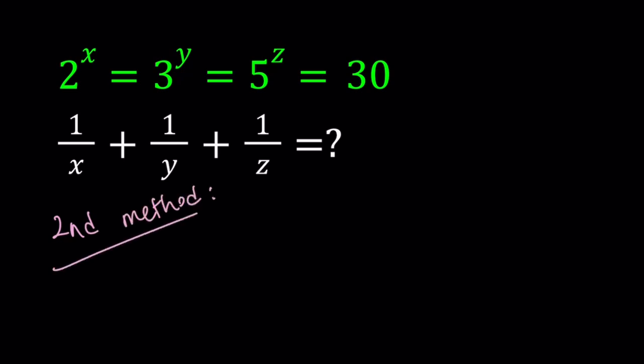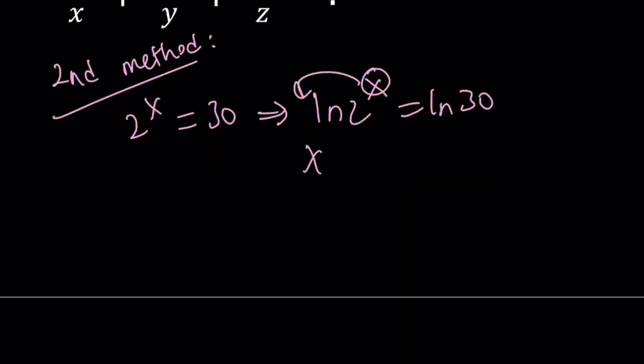So my second method is the following. 2 to power x is equal to 30. I want to align both sides. Let's do it once and then the others will automatically write it that way. So you can go ahead and move the x to the front. This gives you x ln 2 equals ln 30.